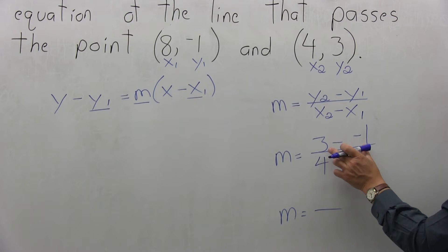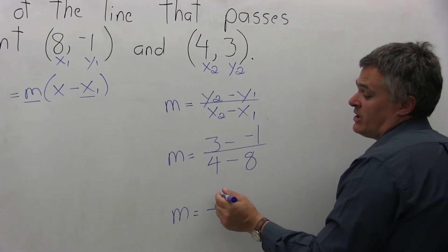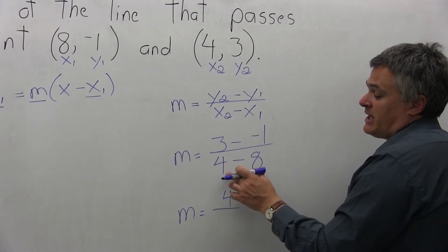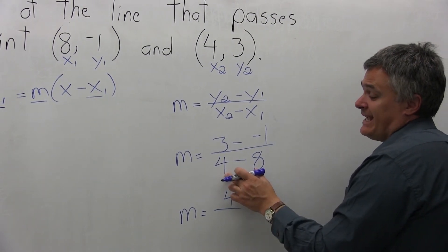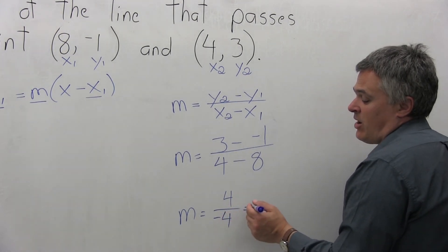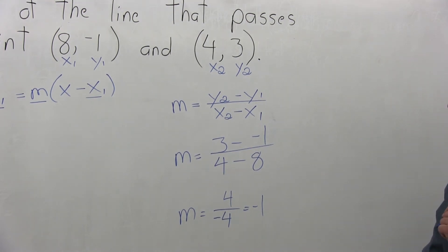Now I can go ahead and simplify that. On the top, 3 minus negative 1 becomes 3 plus 1, which is positive 4. In the denominator, I have 4 minus 8, which is negative 4. Pay attention to the sign. Positive 4 over negative 4 reduces to negative 1.